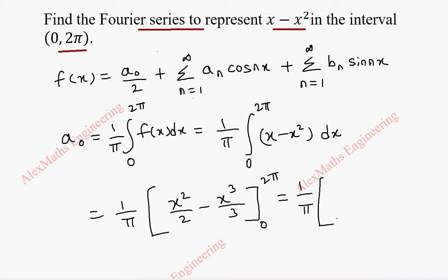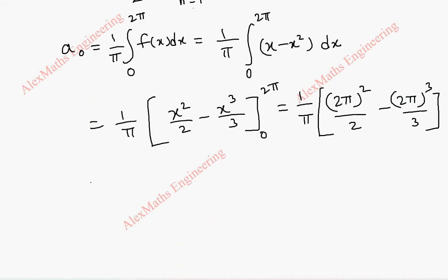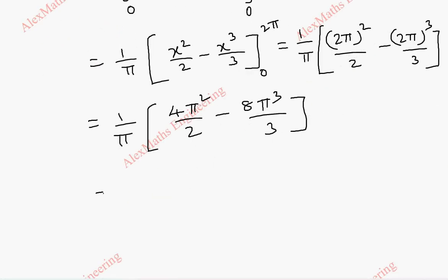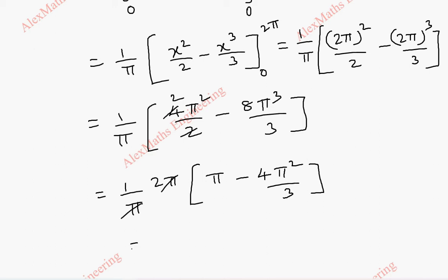Substituting the upper limit: (2π)²/2 minus (2π)³/3, and the lower limit gives 0. So this is (1/π) times [4π²/2 minus 8π³/3]. Taking 2π as a common factor, the remaining terms are π and 4π²/3. Taking LCM of 3, we get (3π minus 4π²)/3. So we have found a₀ = 2(3π minus 4π²)/3.